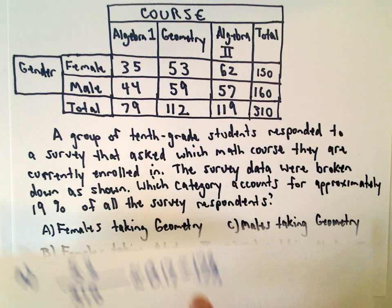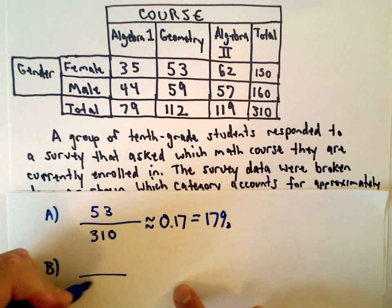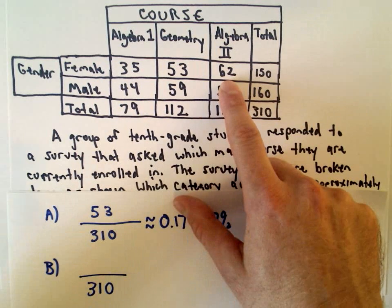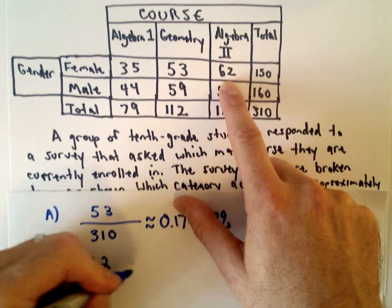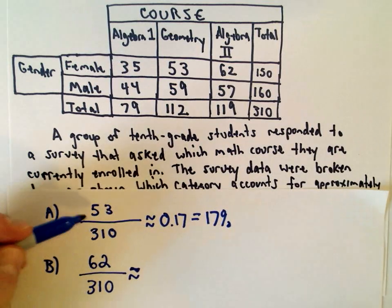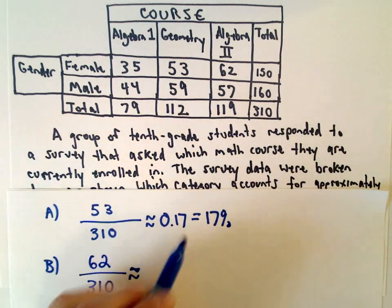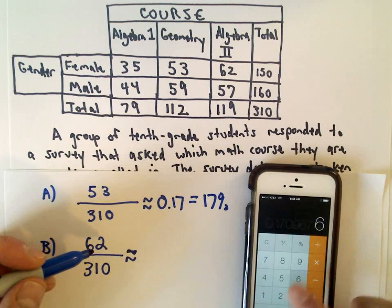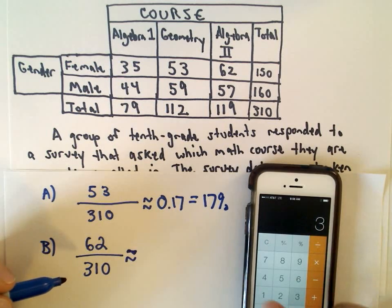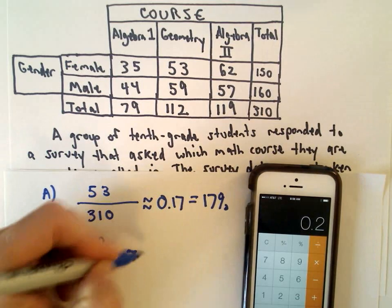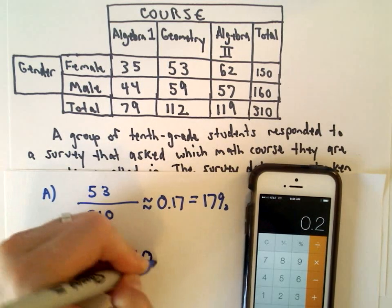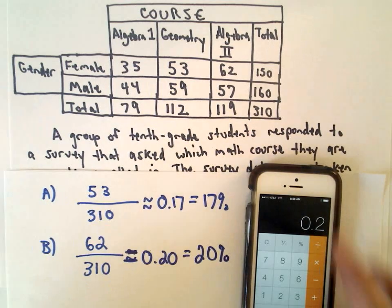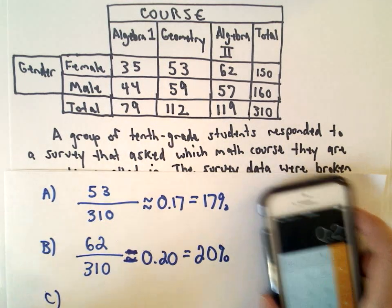B was females taking algebra 2. We've got 310 people total. Females taking algebra 2 — that's 62 people. 53 out of 310 was only 17%, so we want more than 53 people. So 62 divided by 310 is exactly 0.20, or 20%. We'll see if the other ones are a little bit closer.